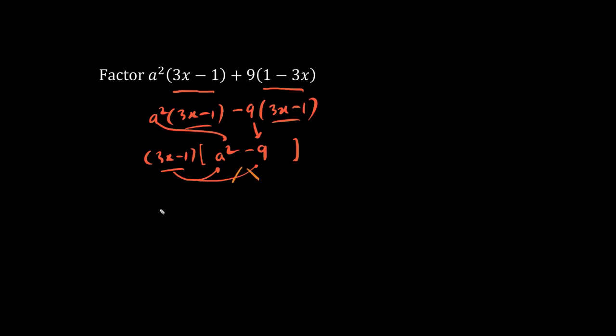Keep on factoring. Notice difference of squares. a squared minus 9 is a plus 3, a minus 3. We now have the fully factored form.